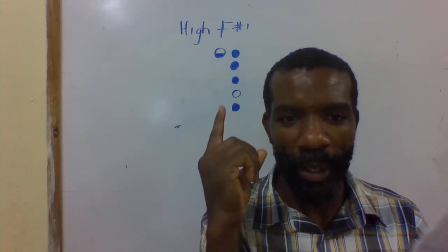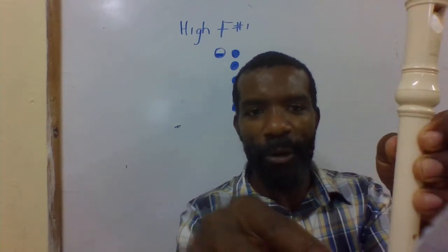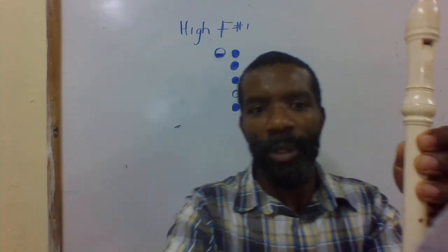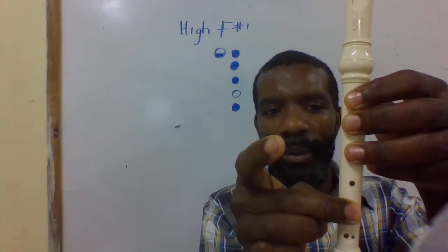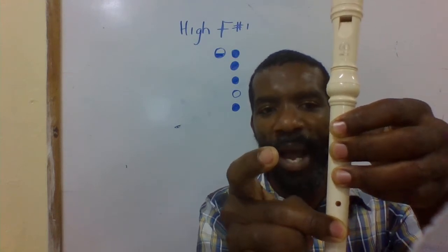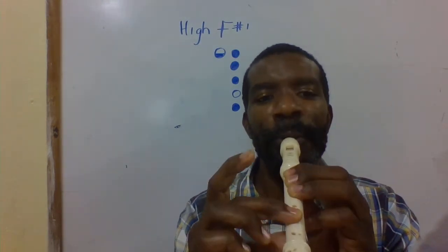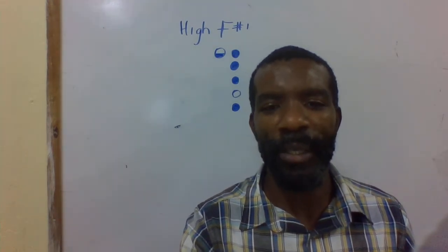As demonstrated on the chart: one, two, three, cover, half cover the thumb, skip one, then cover the next one—high F sharp. One more time, high F sharp. That's high F sharp for you. Keep practicing.